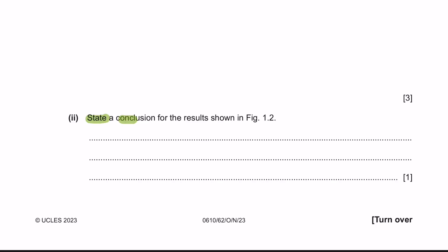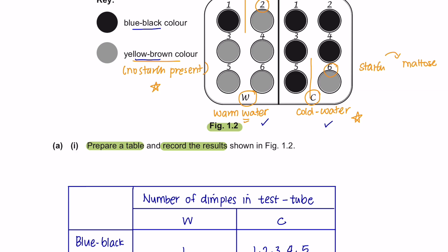Part 2, state a conclusion for the results shown in figure 1.2. So this is pretty straightforward. As mentioned previously, when the temperature was higher, it took a shorter time to show that there were no longer starch present in the solution, meaning that the enzyme activity was higher.